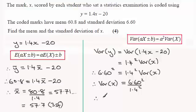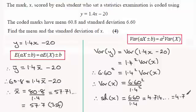And to get the standard deviation, all we need to do is take the square root of both sides. And so that's just going to be 6.60 divided by 1.4. And if you work that out, you'll find you get 4.714 and so on. So if we round this to three significant figures, it's going to be equal to 4.71 to three significant figures, 3SF there. Okay.